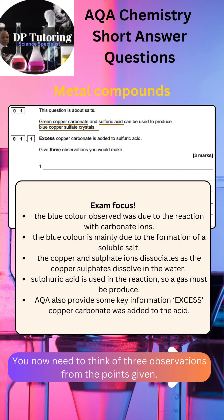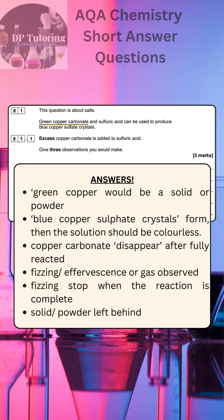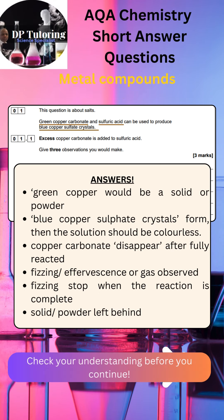Answers for this part of the question are on the screen. Green copper carbonate would be a solid or powder. Blue copper sulfate crystals form, then the solution should turn colorless. Copper carbonate disappears when fully reacted. Fizzing or effervescence — a gas is observed. Fizzing stops when the reaction is complete. Solid powder is left behind.